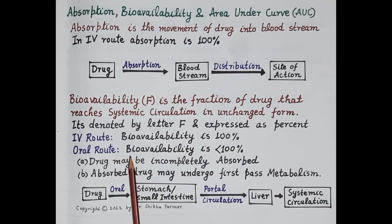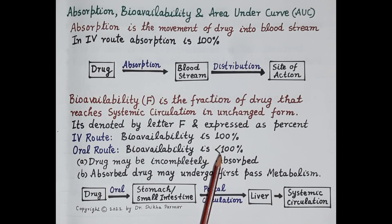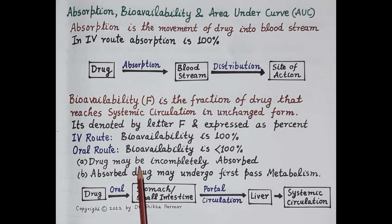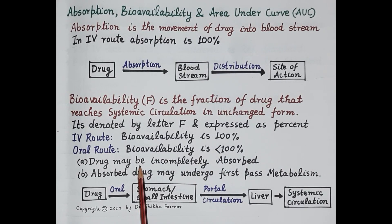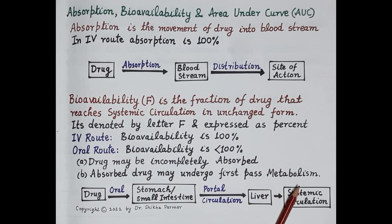When a drug is given by a route other than intravenous, its bioavailability is less than 100 percent. This is because of two factors: first is the barrier of absorption, so the drug may be incompletely absorbed; and second is the metabolism of the drug, as the absorbed drug may undergo first pass metabolism.